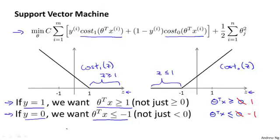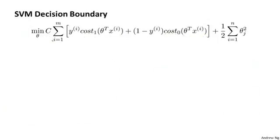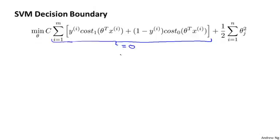Concretely, what I'd like to do next is consider a case where we set the constant C to be a very large value. So let's imagine we set C to be a very large value, maybe 100,000, some huge number. If C is very, very large, then when minimizing this optimization objective, we're going to be highly motivated to choose a value so that this first term is equal to zero. So let's try to understand the optimization problem in the context of what it would take to make this first term in the objective equal to zero.